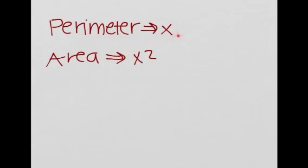So, the perimeter scales by x, where x is the ratio, so we just multiply it by x. And the area will be x squared, where x is the ratio.